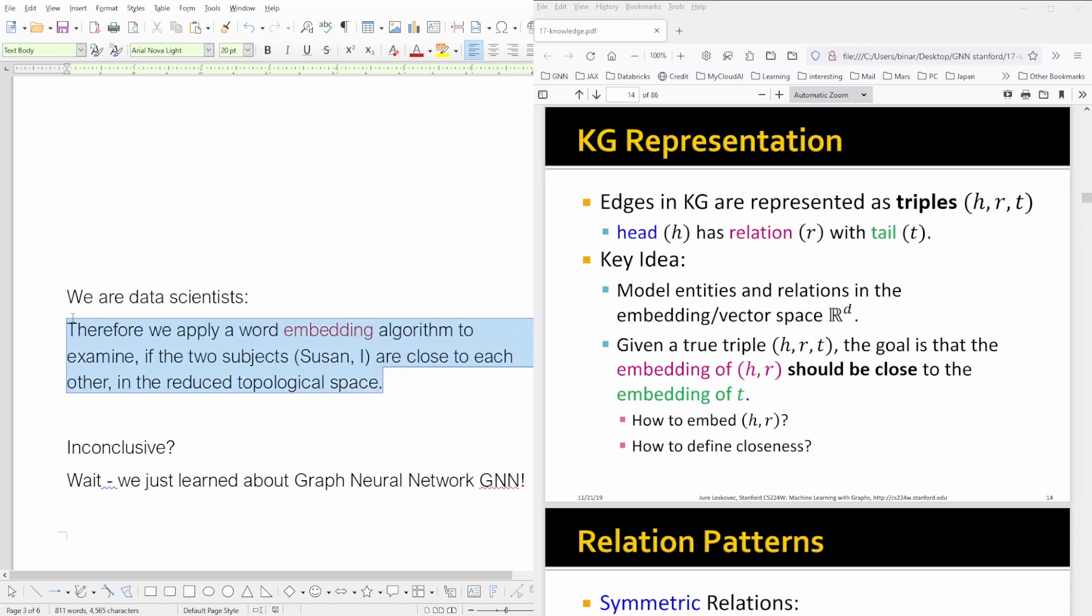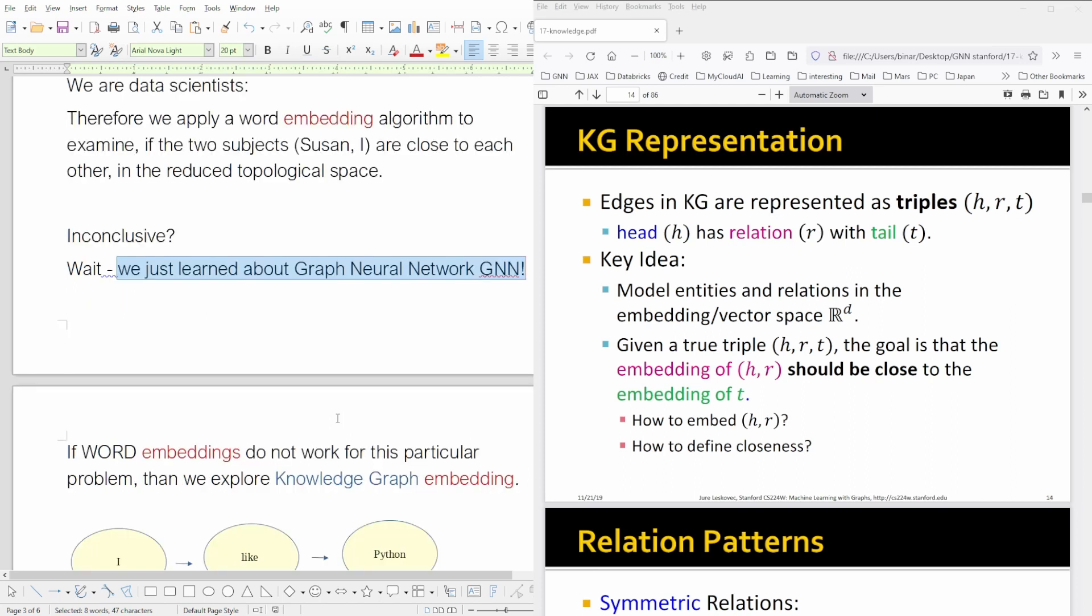Now we do this and we have only two sentences, so you might guess already the outcome—it is inconclusive. We have not enough data. But wait, we just learned about the graph neural network theory and we applied software libraries like PyTorch Geometric, Deep Graph Library (DGL), and encoded this.